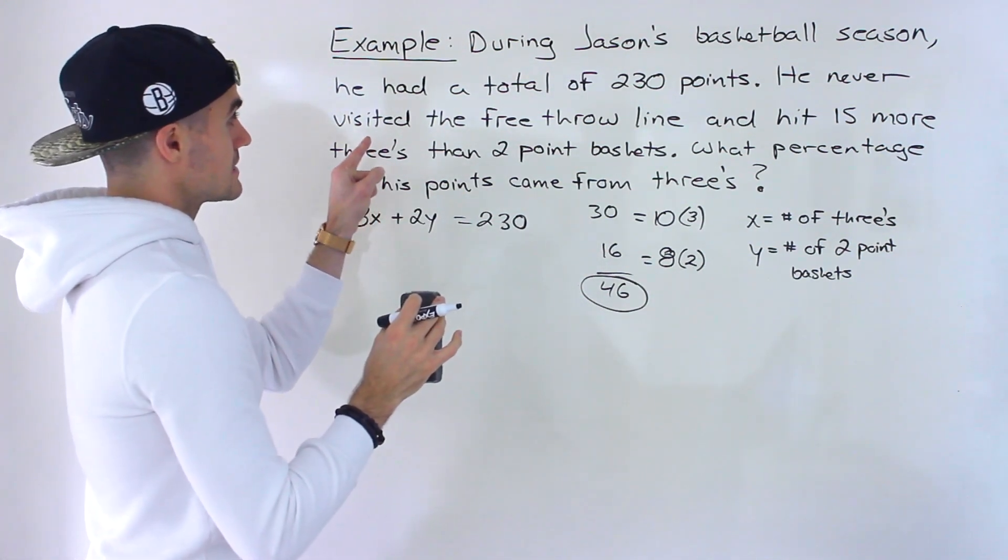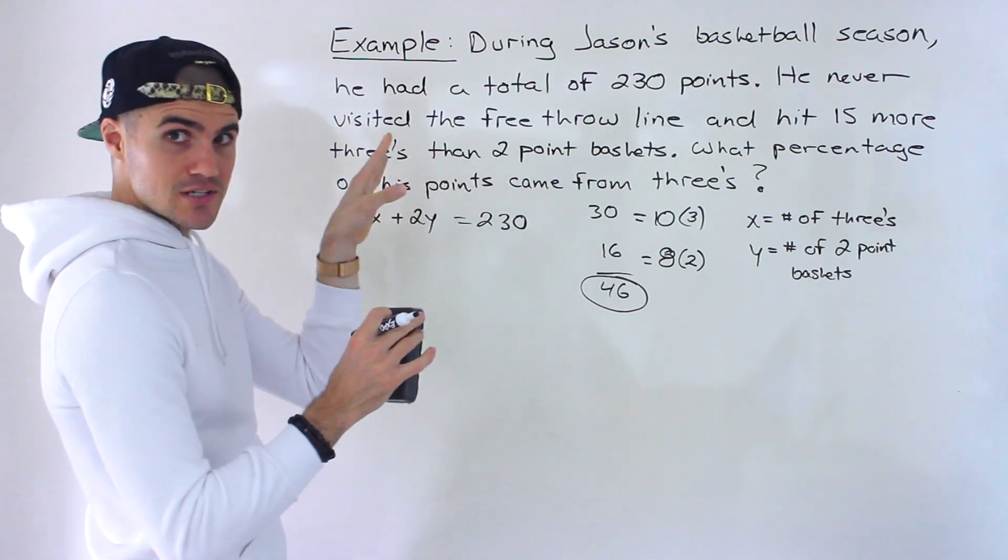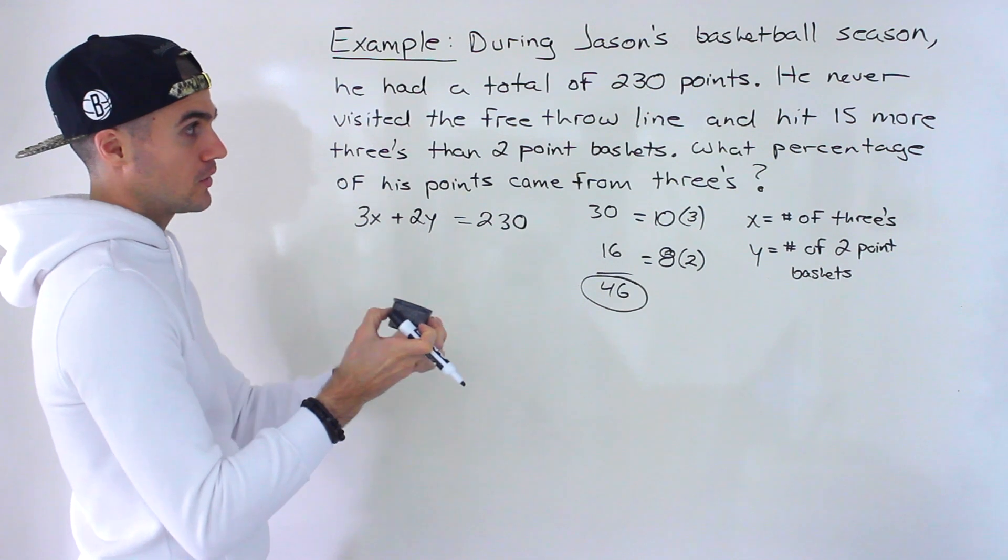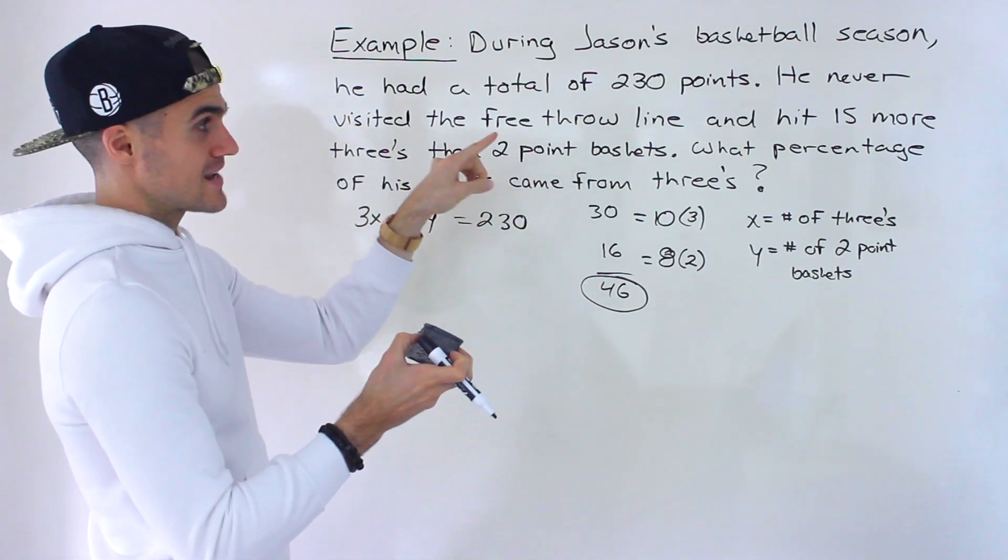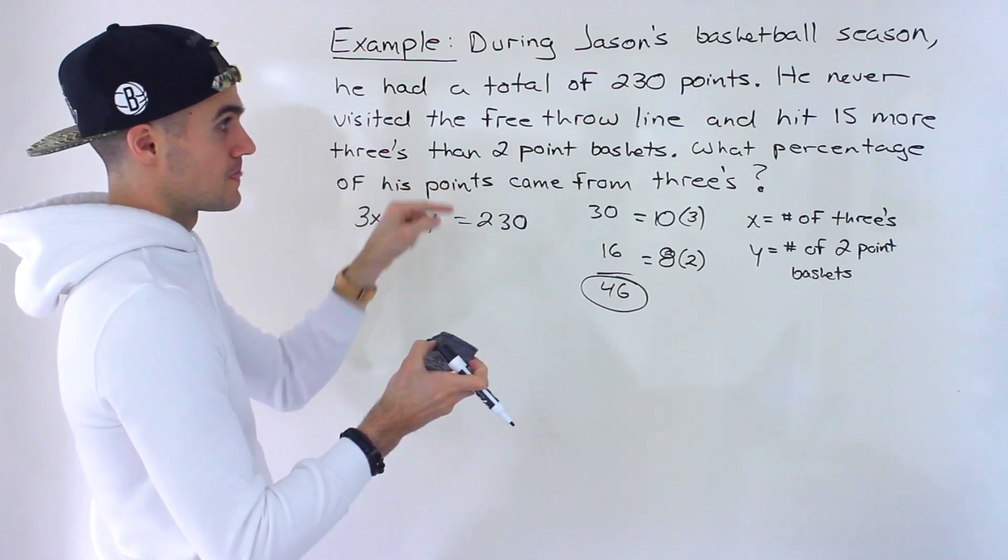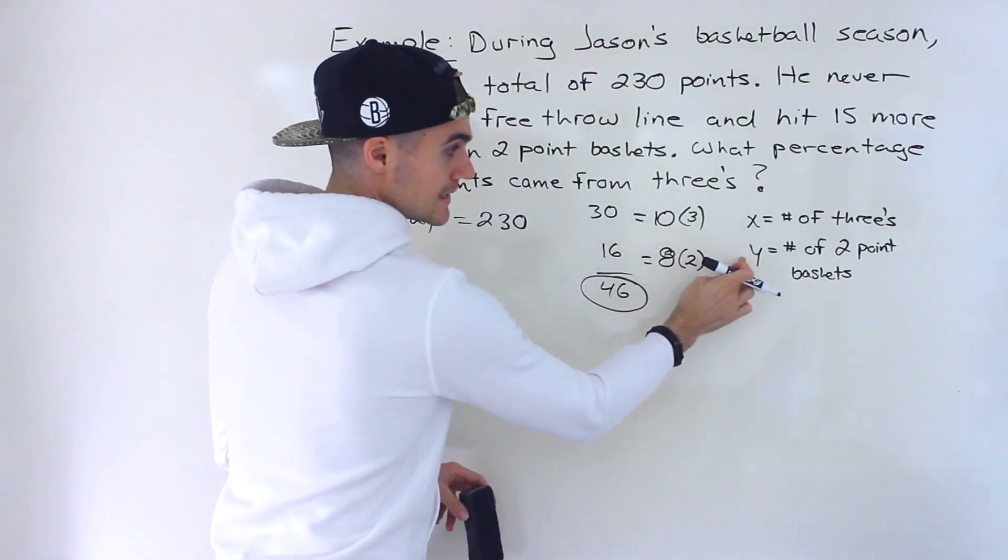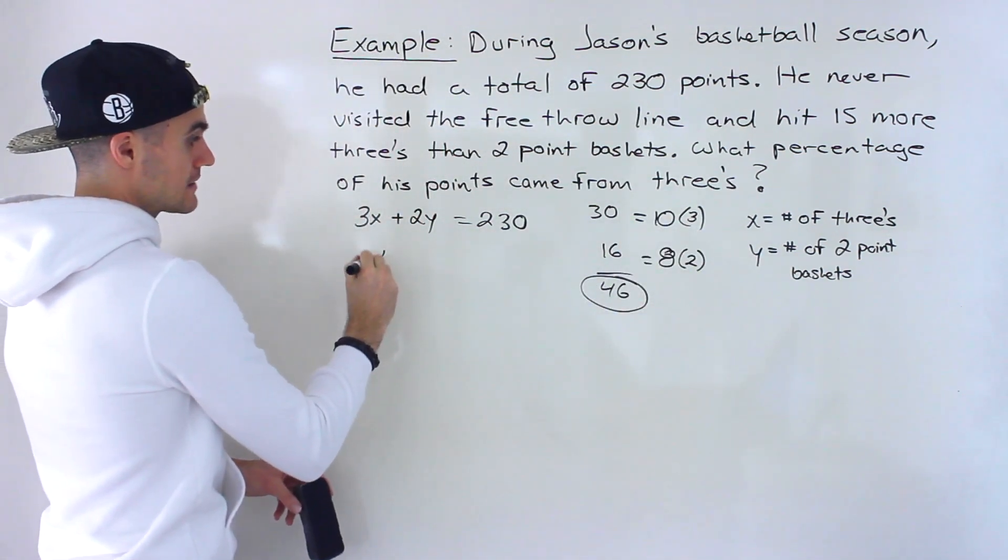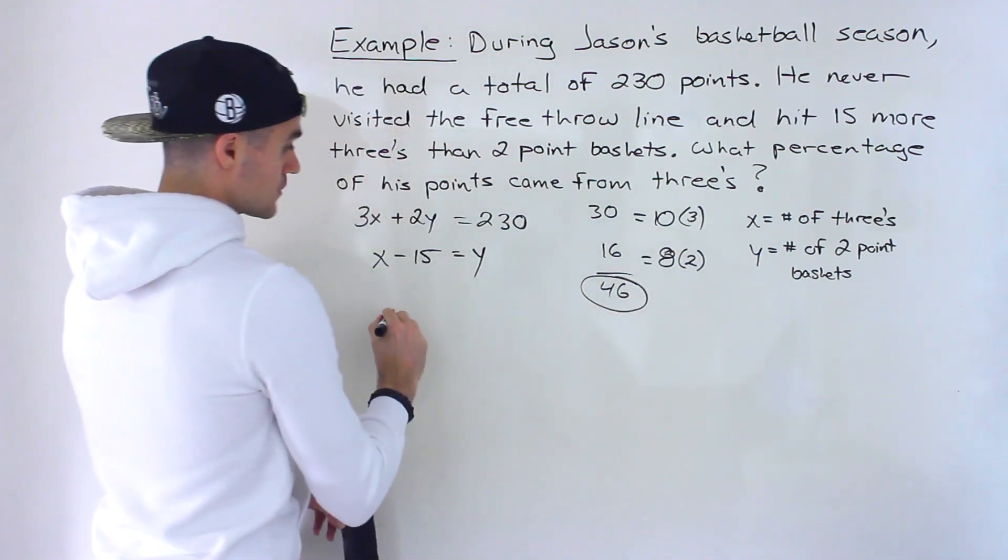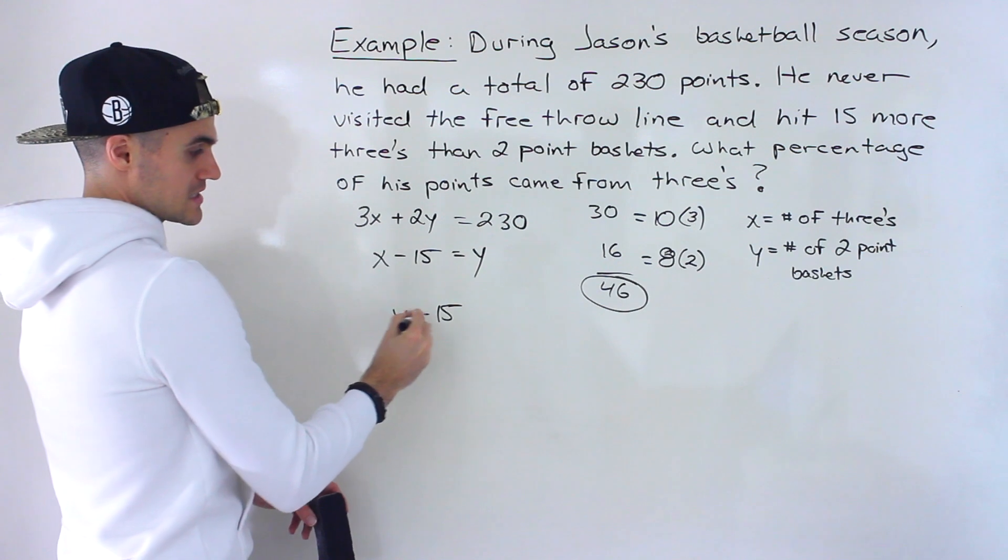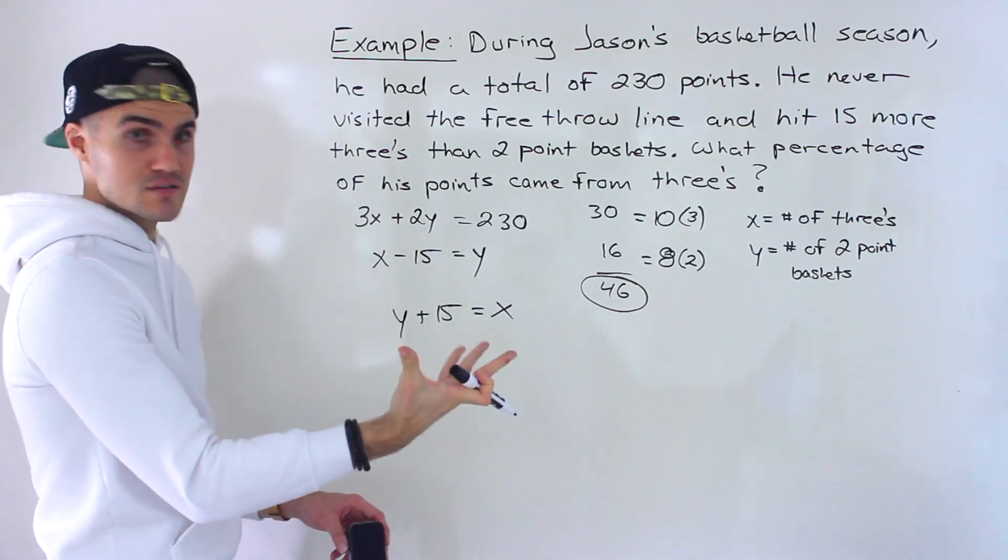And then in the next sentence, he never visited the free throw line and hit 15 more threes than two-point baskets. So in this particular sentence, they're talking about the quantity of shots. They're not talking about the points. They're not saying he had 15 more points with threes than two-point baskets. They're saying he hit 15 more threes than two-point baskets. So basically, 15 more threes than two-point baskets, meaning this number is higher than this one by 15. So we could say x minus 15 is equal to y, or another way is taking 15 and adding it to y. The number of two-point baskets plus 15 would give us the number of three-point baskets. You could just bring the negative 15 over, and it would just be y plus 15 is equal to x. So either or works. I'm going to keep this equation over here.